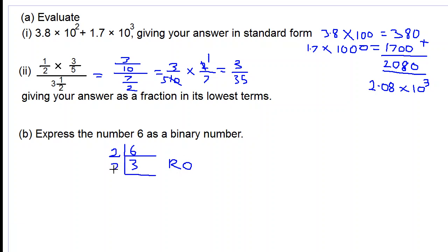We divide by 2 again. 2 into 3 is 1, the remainder is 1. And we divide by 2 again. 2 into 1 cannot, the remainder is 1.